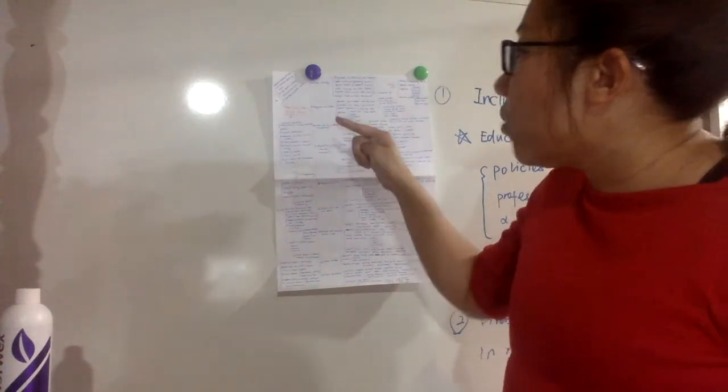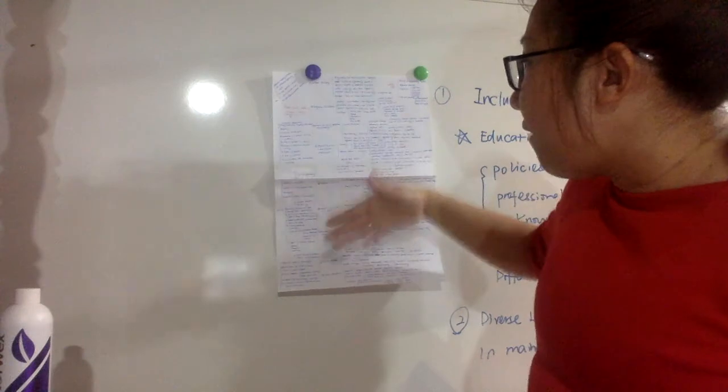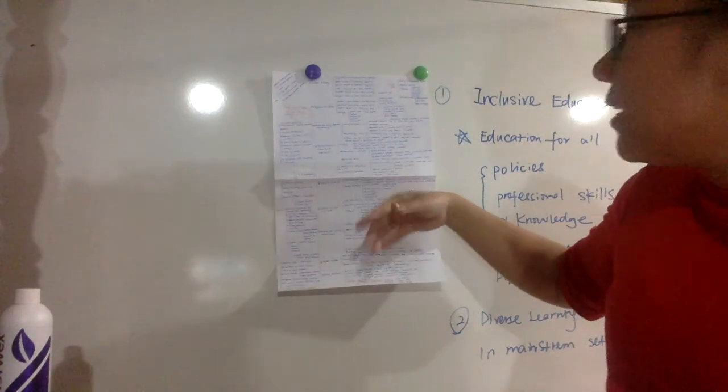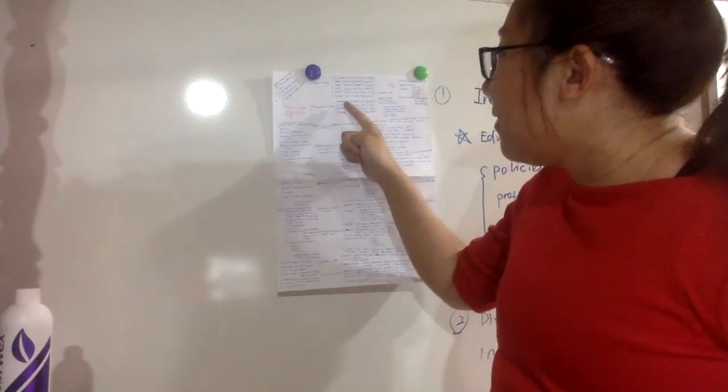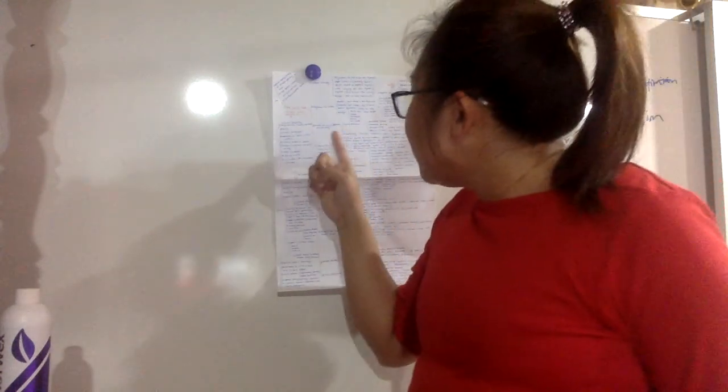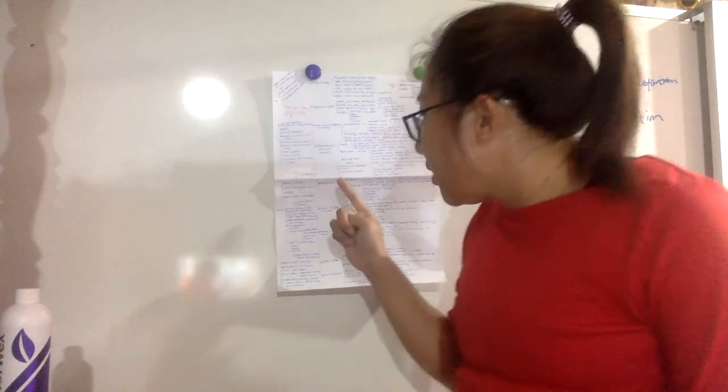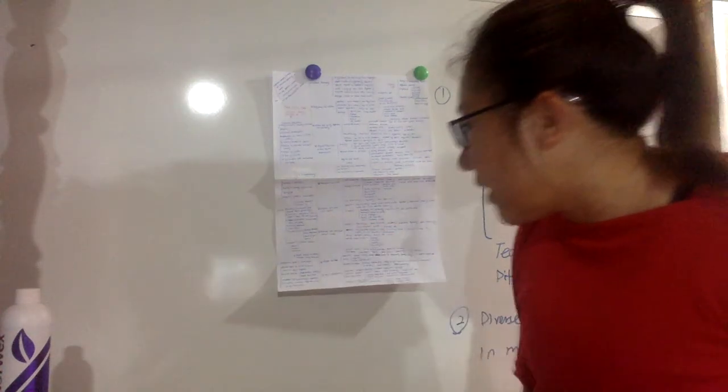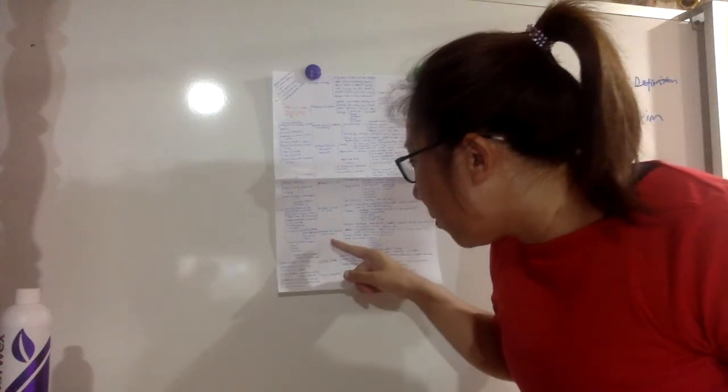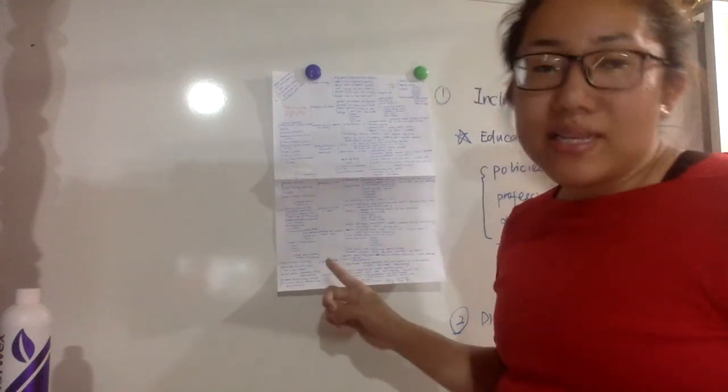For this conceptual map, the main part is about diverse learning needs in mainstream settings. As we can see, there are a few different types of diverse needs. We talk about students with learning difficulties, students with physical disabilities and other health issues, students with intellectual disabilities, students with ASD and ADHD, students with medical or health needs, gifted children, and twice exceptional children.